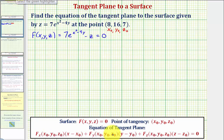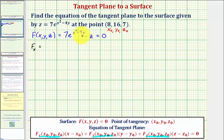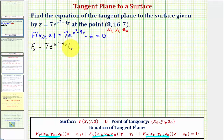For our next step, we'll determine our partial derivatives and evaluate them at the point of tangency. For the partial with respect to x, we treat y and z as constants. The derivative of 7e^(x² - 4y) with respect to x is 7e^(x² - 4y) times the derivative of x² - 4y with respect to x, which is 2x — this is the chain rule. Minus the derivative of z with respect to x, which is zero.